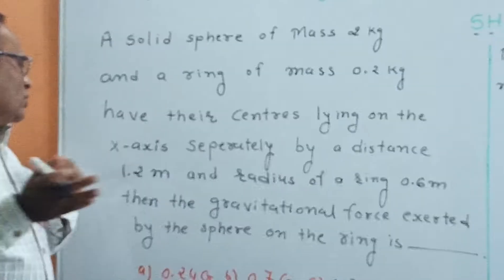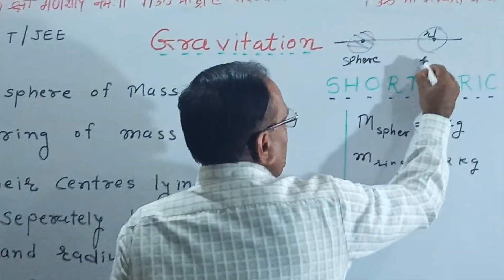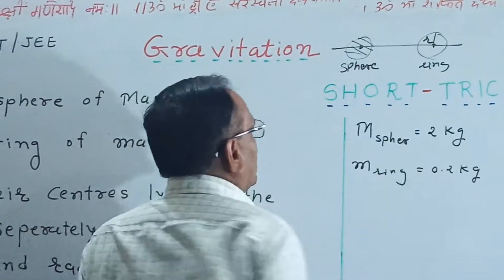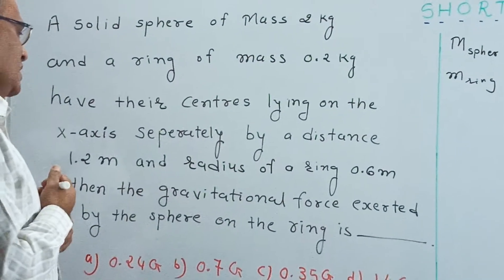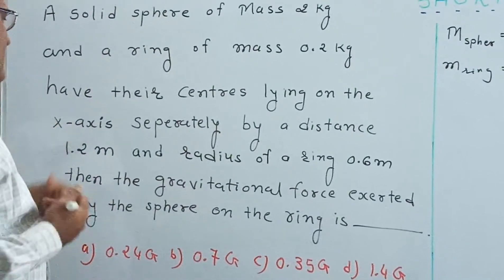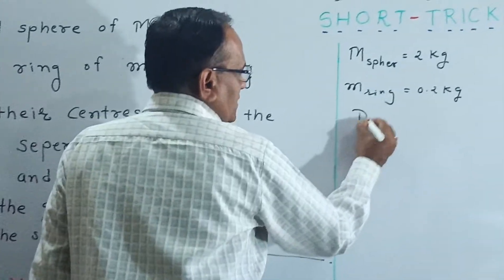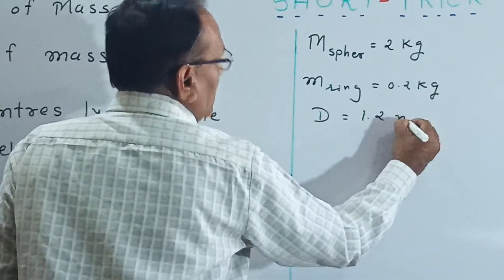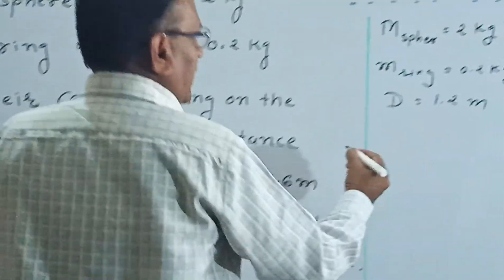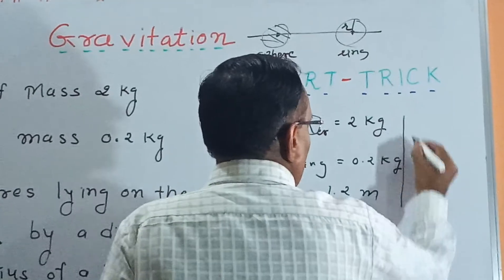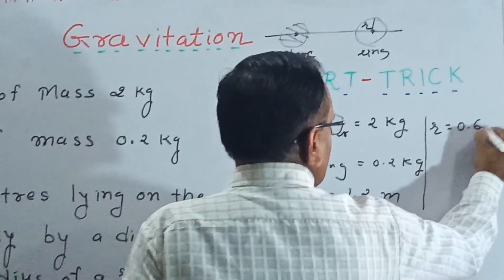They have their centers lying on the x-axis. This is the sphere and this is the ring. The radius of the ring is 0.6 meters, and the separation between them, D, is 1.2 meters.